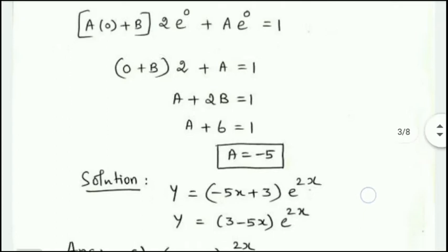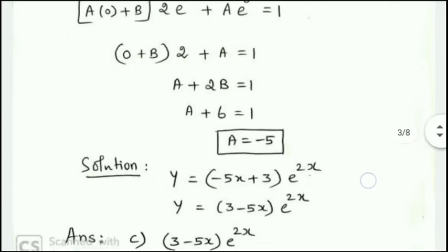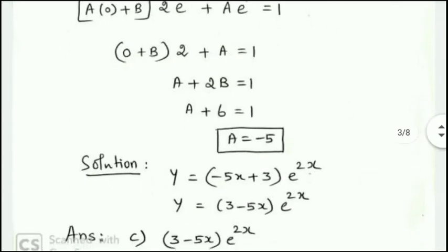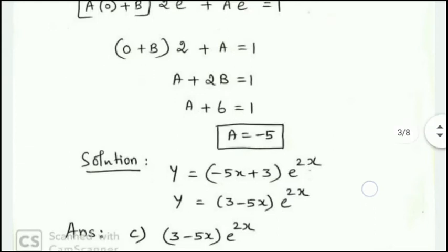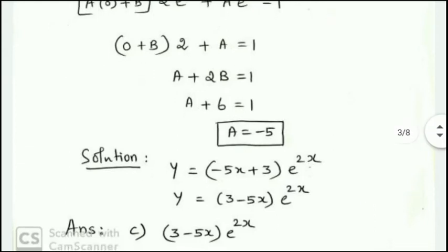Applying the second condition y'(0) = 1 and solving, we find A = -5. Therefore the solution is y = (3 - 5x)e^(2x). Option C: the answer is (3 - 5x)e^(2x).